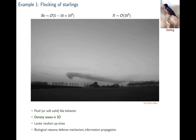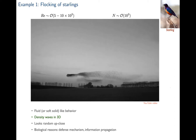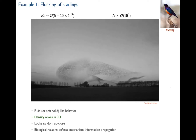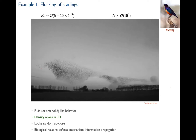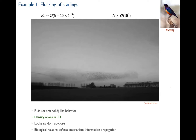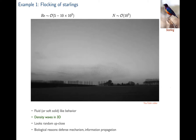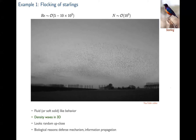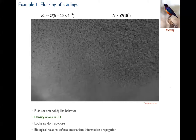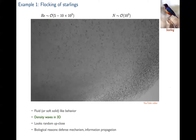A classic example is flocking — these are starlings forming beautiful flocks of thousands of birds. The flock as a whole behaves like a fluid or soft solid that can deform, twist, and move together. You see beautiful density waves — black patches — during the flocking motion. Zoomed in, individual birds seem to move randomly, but at a larger length scale they move collectively and coherently, generating emergent collective behavior.